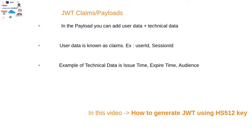Now let me explain JWT claims and payload. The second part of the JWT structure is the payload, also called claims. In the payload you can add user data plus technical data. User data includes things like user ID and session ID, while technical data includes the issue time, expiration time, and audience — where audience is the identifier of the project generating the token.